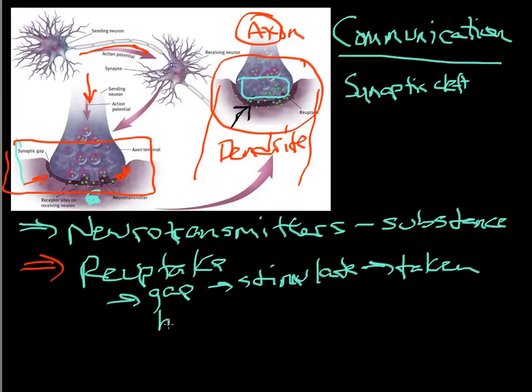Once they stimulate the next dendrite, then they are taken back in, back into the receptacles at the end of the axon, taken back in and recycled to be used again. In a lot of ways, this system is the ultimate recycling machine.